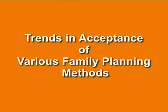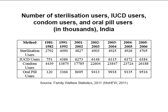Next is trends in acceptance of various family planning methods. The acceptance of female sterilization has increased nationally, in the EAG states and in other states. Use of IUCD has remained stagnant while male sterilization has declined. Table 6 on your screen shows that sterilization users declined from 4.9 million to 4.7 million, IUCD users marginally increased from 6.17 million to 6.18 million, and the number of condom and oral pill users have also increased considerably.